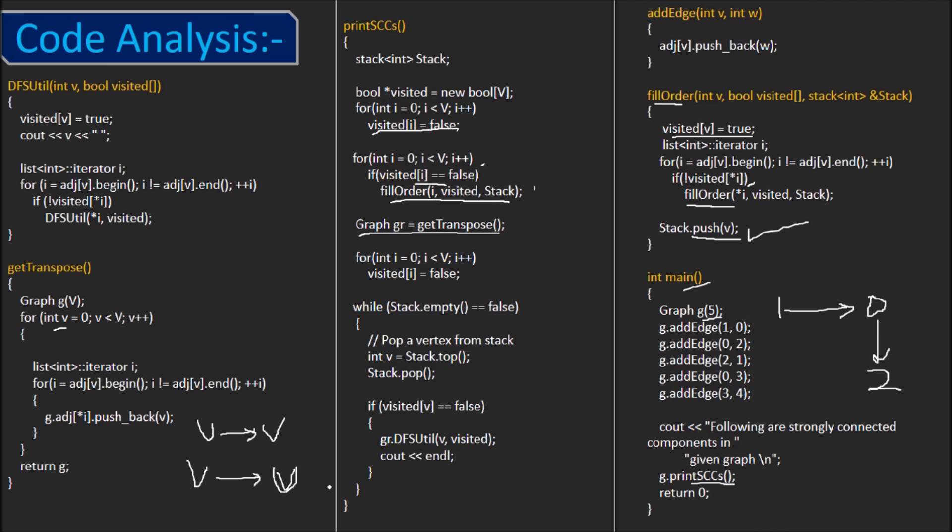Now, we need to work on the transpose graph. We set all the vertices as unvisited for our second DFS. The while loop goes on until there are no elements left in the stack. The top vertex is popped. If this was unvisited, DFS is called on this vertex using a new DFS function. This function is pretty much similar to our previous DFS, but it does not compute finish time anymore. But in addition, it prints the vertices visited during the DFS traversal.